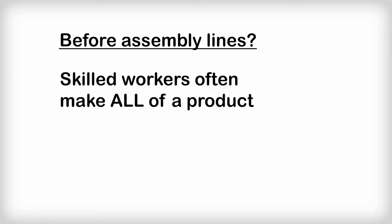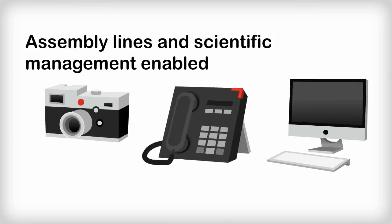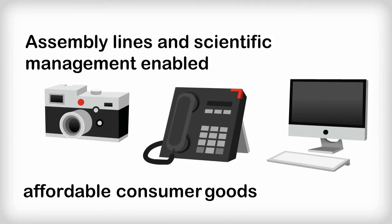The invention of the assembly line, however, enabled the mass production of consumer goods at low prices. Division of labour can bring down unit costs.